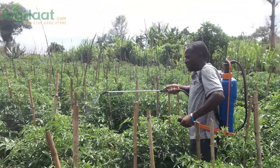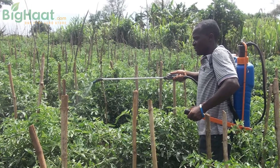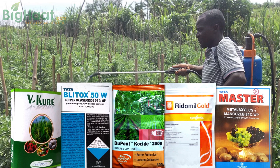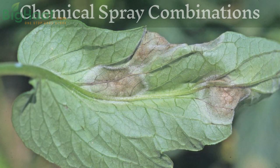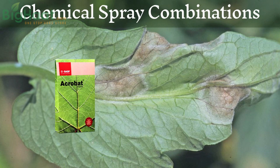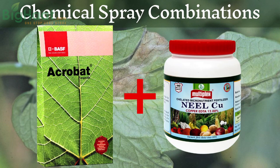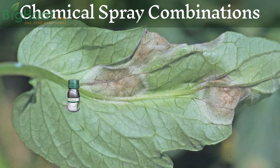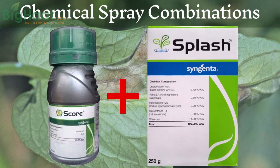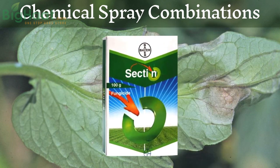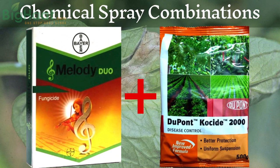Apply broad spectrum fungicides as soon as possible at the first sign of the disease, or ideally before symptoms develop. For effective control of Phytophthora infestans on tomato and potato crops, both protectant and systemic fungicides are required. Some strains are resistant to fungicides with selective mode of action, so rotation of fungicides is required for best results. Suggested chemical combinations include: Acrobat 1 g/L plus Nilcu 0.5 g/L; Score 0.5 g/L plus Splash 2 g/L; Sectin; and Melody Duo plus Cocine.